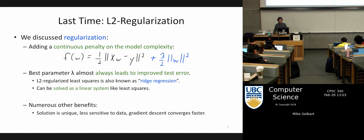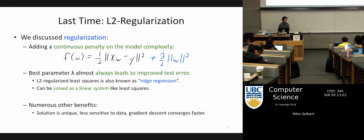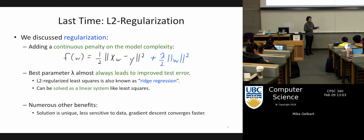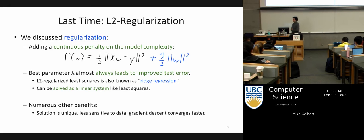We briefly mentioned that in terms of solving the system, we don't really need to do any extra work when we add L2 regularization — that's not going to be true anymore today. It just seems like an all-around good thing that is most of the time a good idea, and you can pick lambda just as you would pick any other hyperparameter.